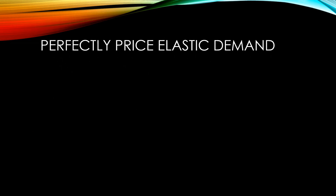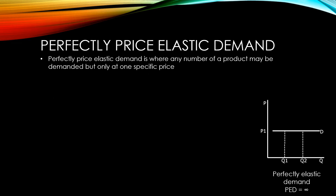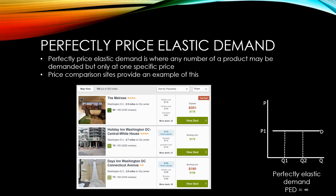Perfectly price elastic demand is a special type of elastic demand where any number of a product may be demanded but only at one specific price. This isn't a very realistic situation, but you can sort of see an example of it when people visit price comparison sites. Once you've visited the price comparison site, most people will click on the lowest offer that's there. No one's going to click on the other buttons to say, 'I'd like to pay more money for this please.'